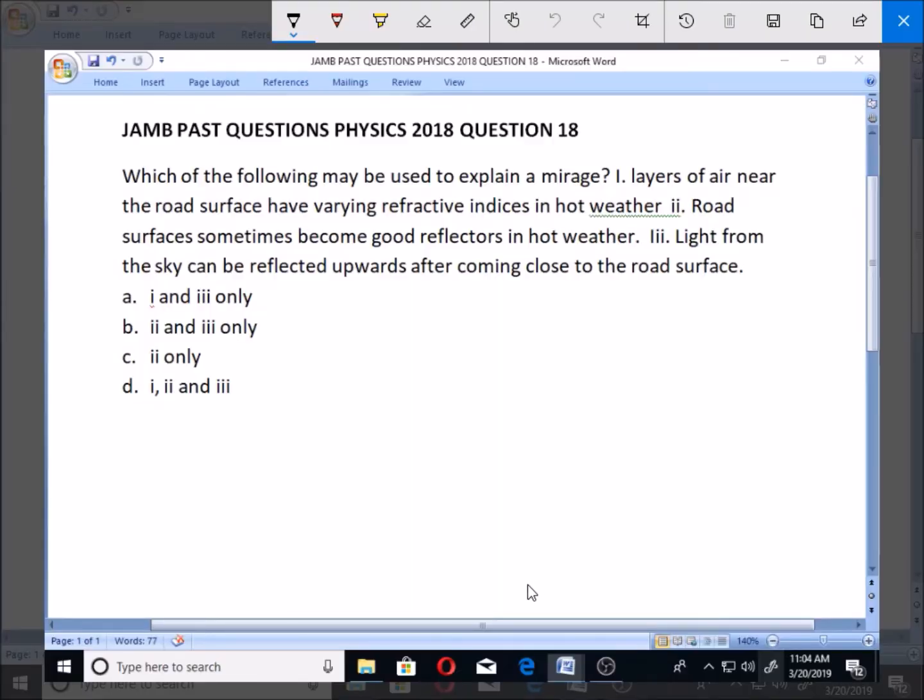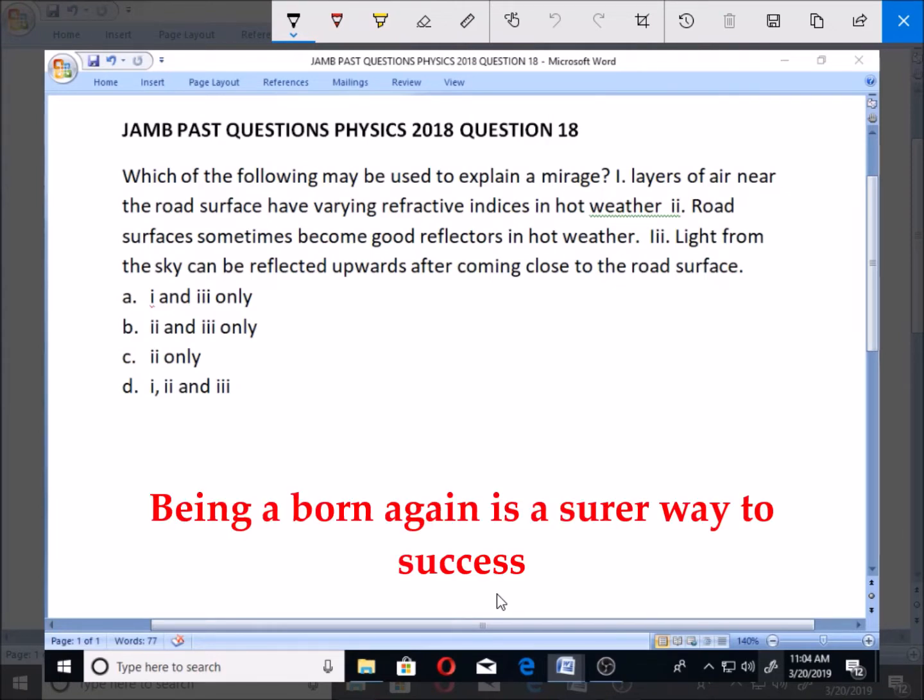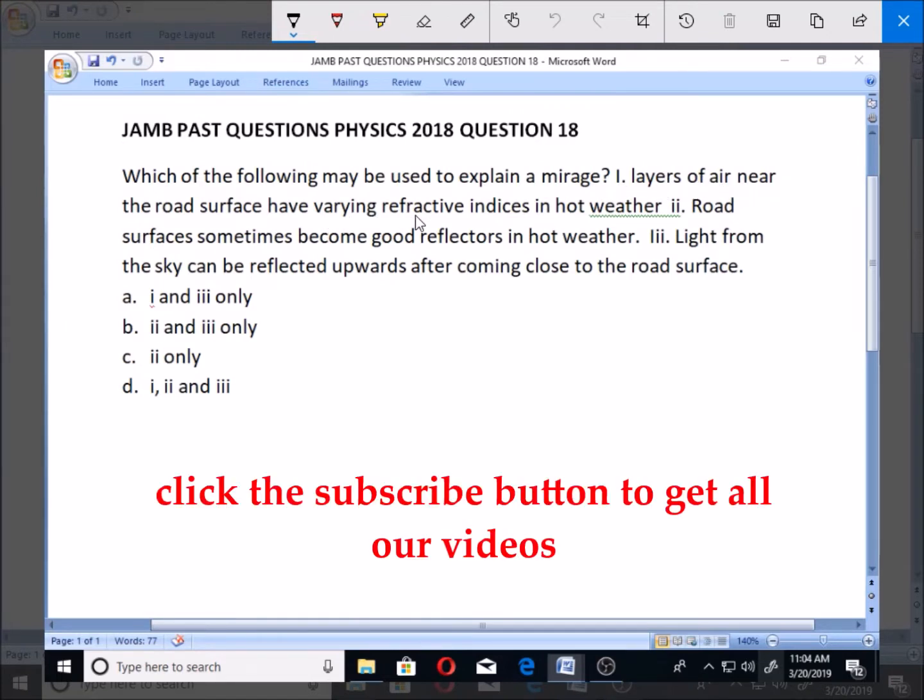Let's look at this question number 18 for JAMB Past Question Physics 2018. Which of the following may be used to explain a mirage? I. Layers of air near the road surface have varying refractive indices in hot weather.